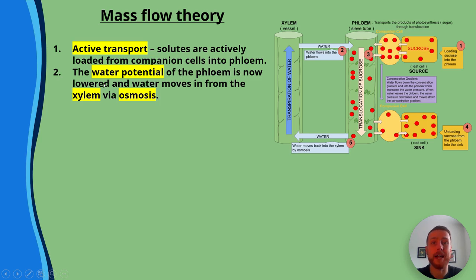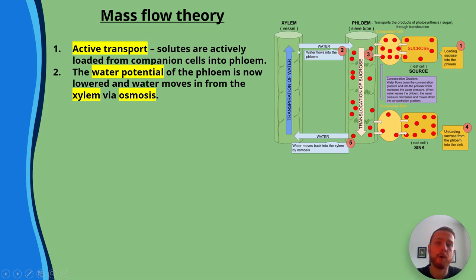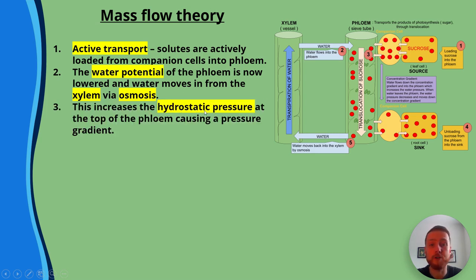Number two: the water potential of the phloem is now lowered and water will move in from the xylem via osmosis. The xylem has a relatively higher water potential, so water enters the phloem across the cell membranes via osmosis. This increases the hydrostatic pressure at the top of the phloem because we've pumped in sugar and water.